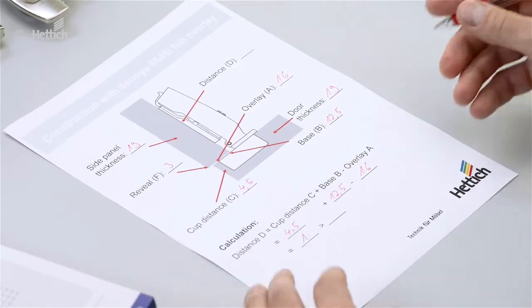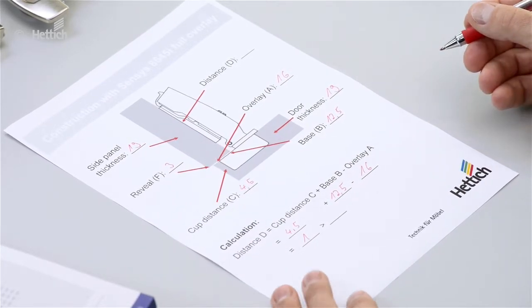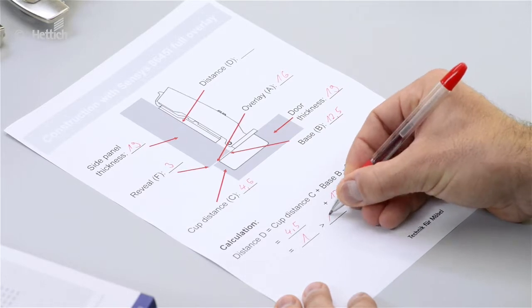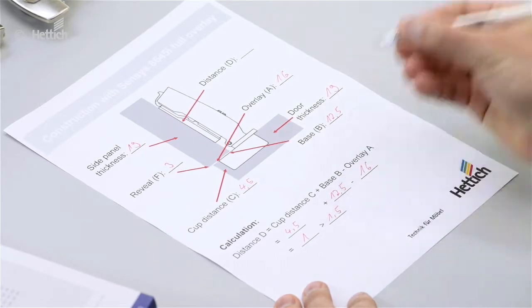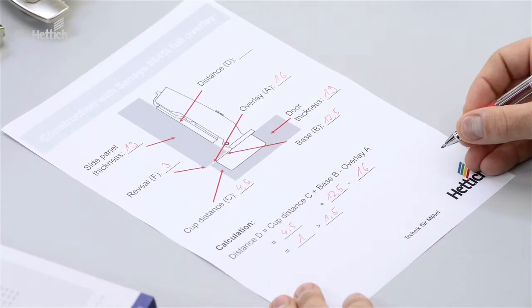But that doesn't exist so we go to the next bigger size. That's 1.5 mm. The resulting difference of 0.5 mm has to be adjusted with the overlay adjustment screw integrated in the hinge.